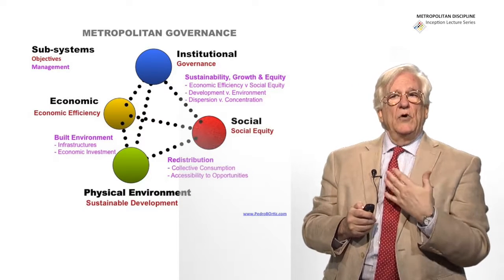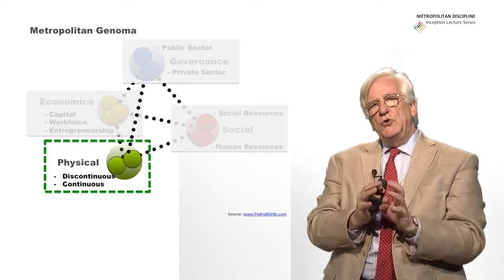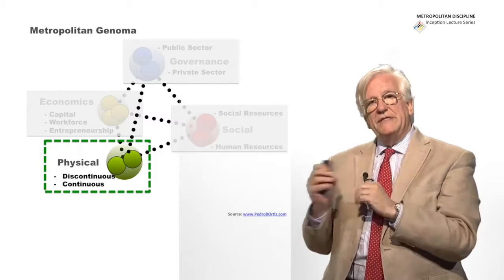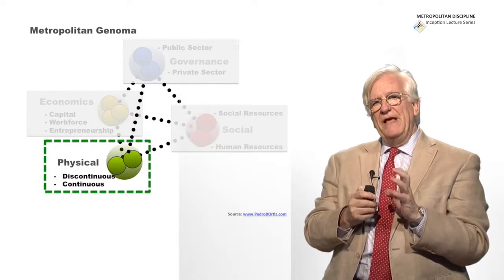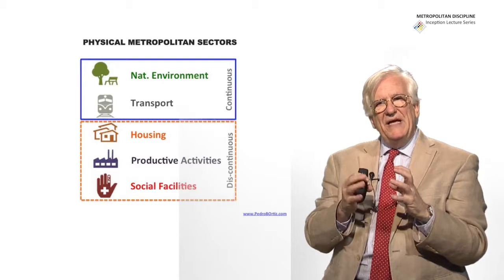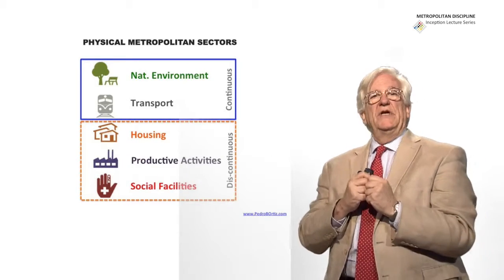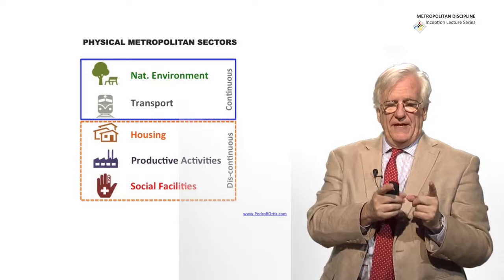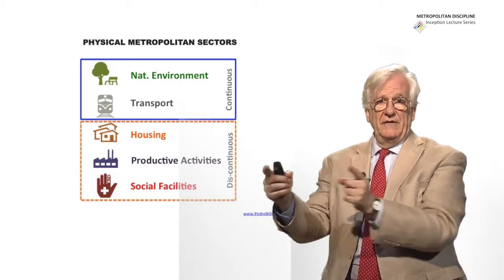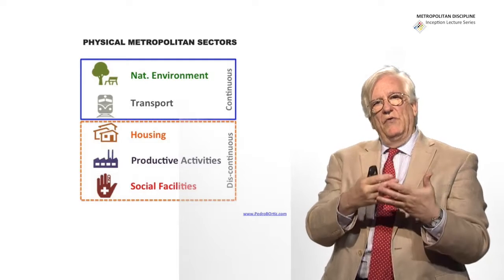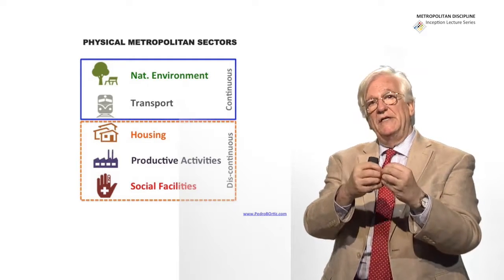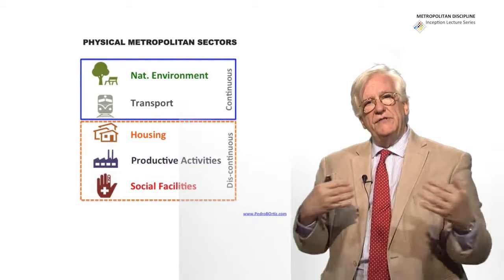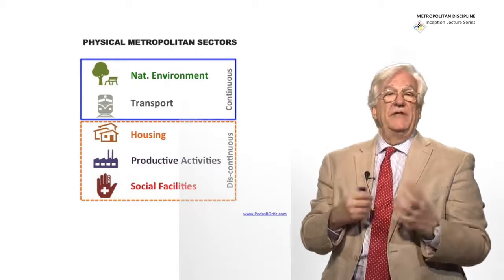In that component we have mainly two sets of systems. We have the continuous systems and the discontinuous systems. The continuous systems are those that have to be together to work. For instance, in the continuous systems we have the natural environment and the transports. You cannot have a kilometer of train, and a kilometer of train. The train has to go through. And when you arrive to the station you have to be able to get down of the train and get into a bus or a BRT or any other means of transport. So really it has to be a continuous system where contiguity is necessary.